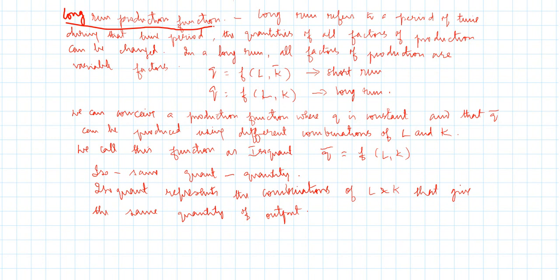An isoquant represents the combinations of labor and capital that give the same level of output. This is similar to an indifference curve, where an indifference curve gives different combinations of two commodities that yield the same level of satisfaction. Similarly, here different combinations of two factors of production give the same level of output. Indifference curve is used in consumption context; isoquant is used in the context of the production function.